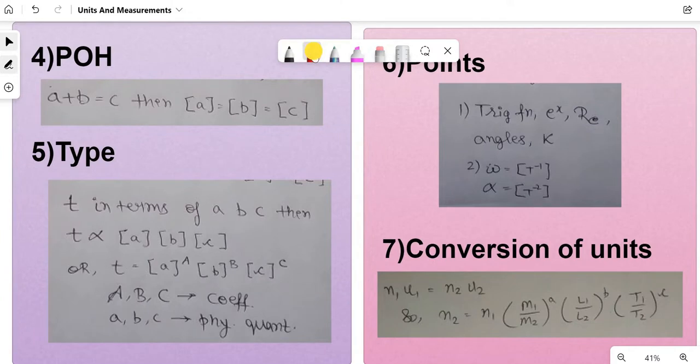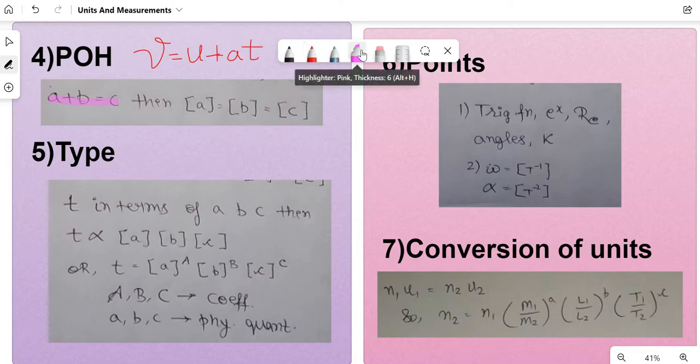POH means principle of homogeneity. If there is an equation like A plus B equals C, like Newton's laws of motion where V equals U plus AT, you can apply these rules. Typically in the exam they will give you an equation and ask you to find the dimension of a specific quantity. A plus B equals C means dimension of A equals dimension of B, which equals dimension of C. So you can equate it and find the required dimension.